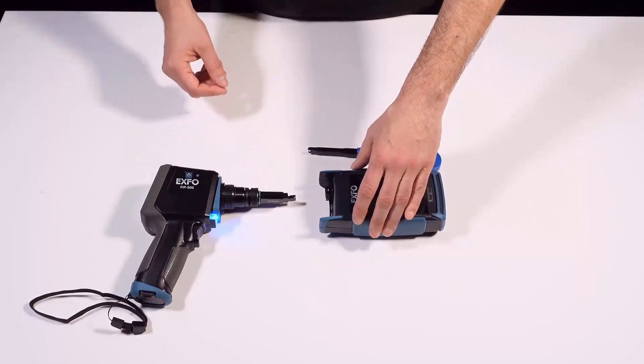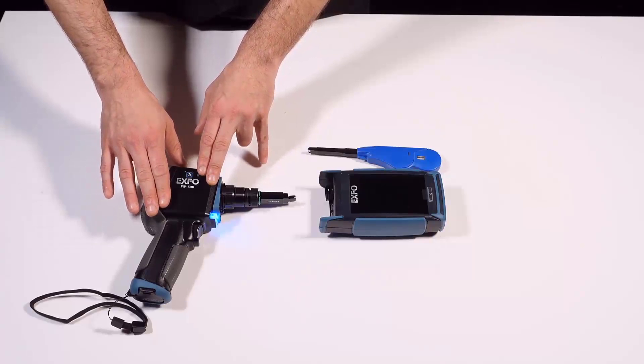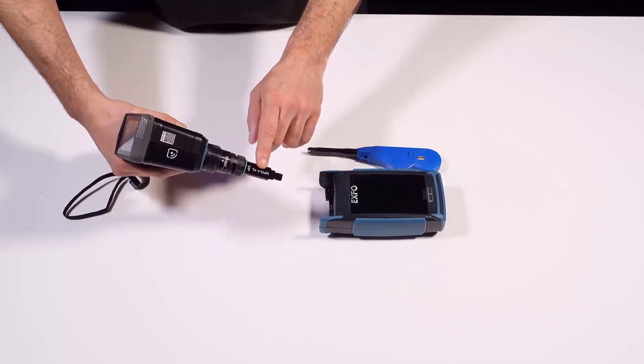You can do so by using a fiber inspection scope. In this case it is Expo's FIP500, which is equipped with an MPO APC keyless adapter tip.